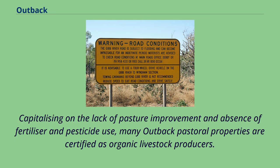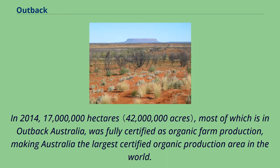Capitalising on the lack of pasture improvement and absence of fertilizer and pesticide use, many outback pastoral properties are certified as organic livestock producers. In 2014, 17 million hectares, most of which is in outback Australia, was fully certified as organic farm production, making Australia the largest certified organic production area in the world.